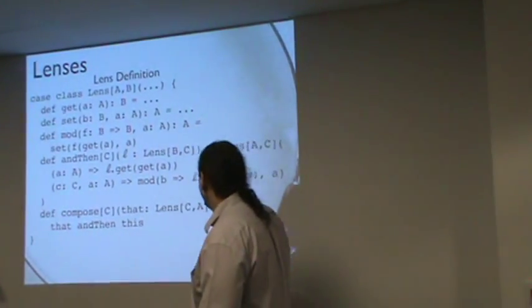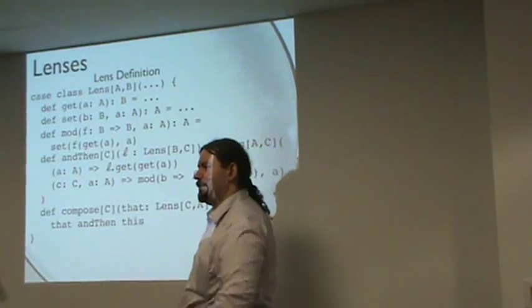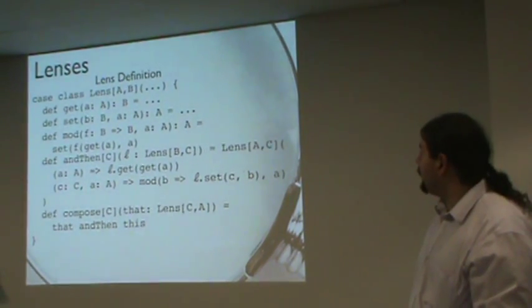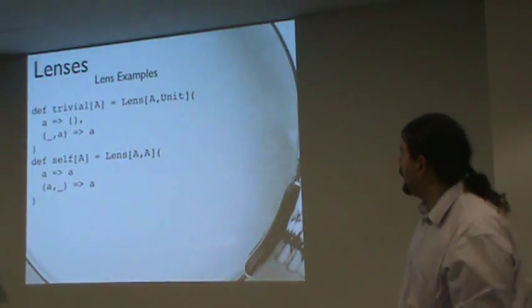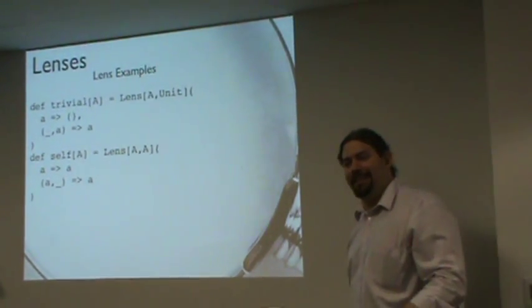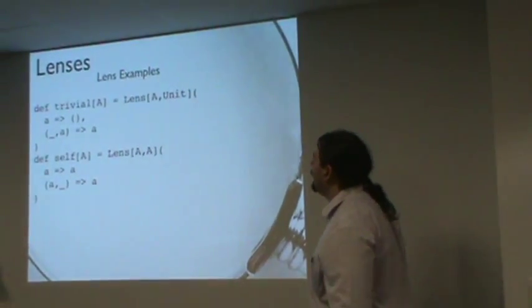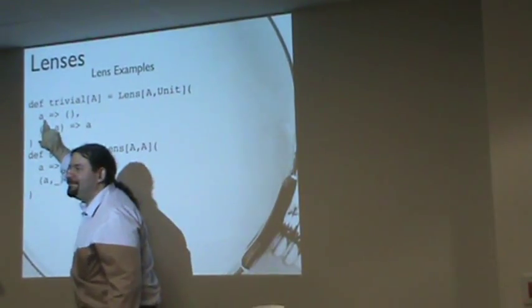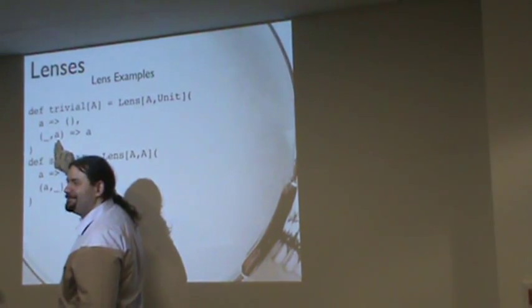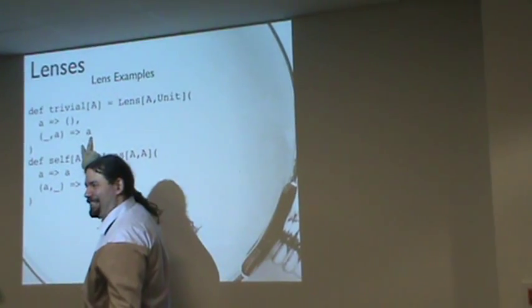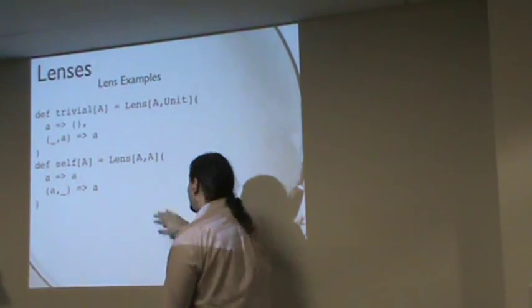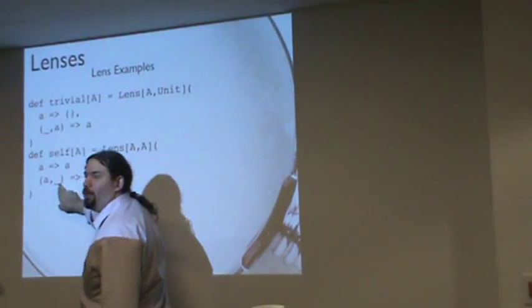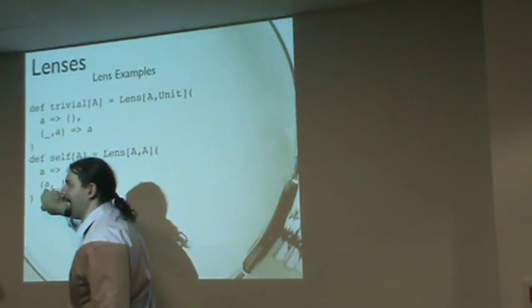We were able to compose two lenses that meet head to tail, and we can define compose just like function composition in Scala. Now I'll talk through some example lenses. We'll start with the ridiculously easy lens: given any value A, I can get a unit out of it by ignoring it. I can also take a unit and an A and give you back an A by ignoring the unit. I can get an A out of an A just by returning it and ignoring the old one.